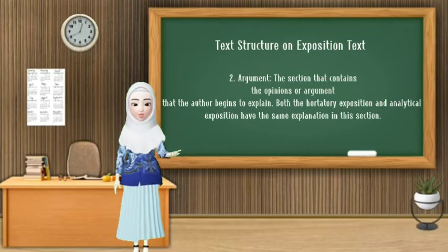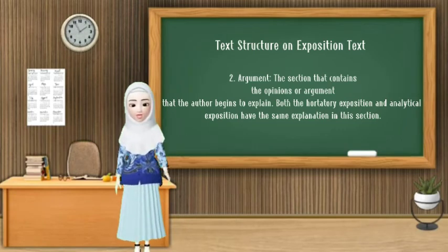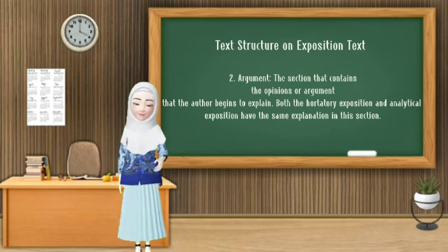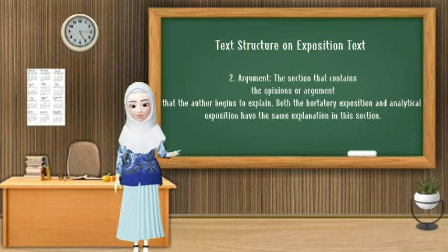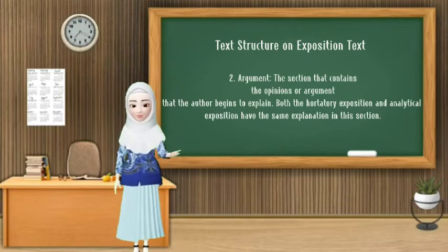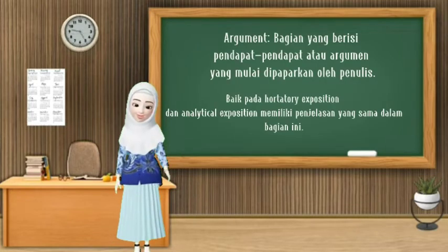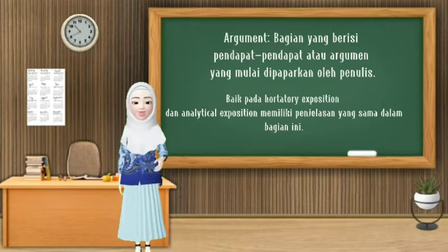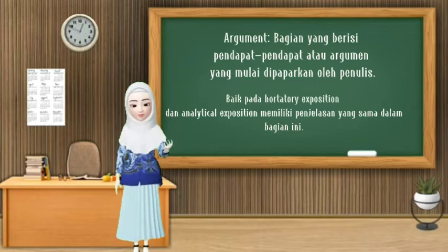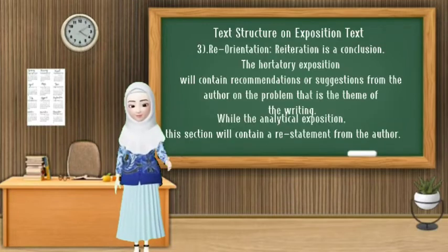For the next structure is argument. This is the section that contains the opinions or arguments that the author begins to explain. Both the hortatory exposition and analytical exposition have the same explanation in this section. Bagian yang kedua yaitu argument — bagian yang berisi pendapat-pendapat atau argumen yang mulai dipaparkan oleh penulis. Baik pada hortatory exposition dan analytical exposition memiliki penjelasan yang sama dalam bagian ini.